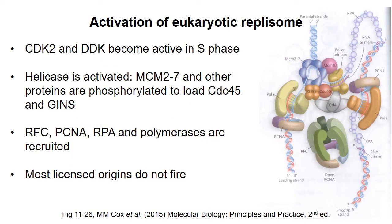After licensing of replication origins has been shut down, the kinases CDK2 and DDK become active and control activation of already licensed origins. The picture at the right shows an active eukaryotic replisome. The MCM hexamer is associated with CDC45 and the GINS complex — these other proteins are required for the helicase to be active. In S phase, the MCM complex becomes phosphorylated, which results in recruitment of these other proteins, activating the helicase. Other proteins required for replication, like the primase, the clamp loader, the clamp, the single-strand binding protein, and DNA polymerase, are recruited to the active helicase and replication can begin.